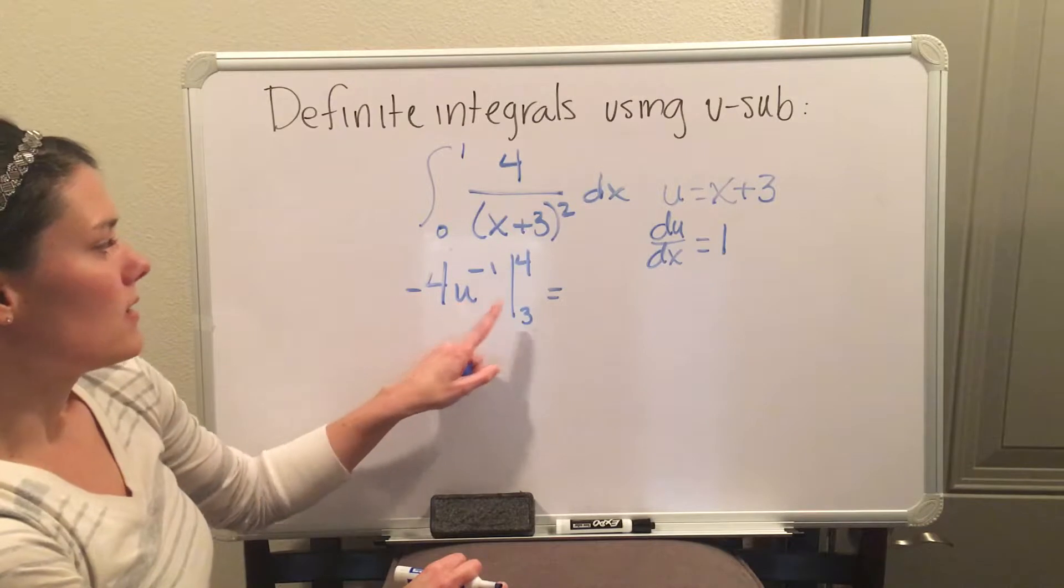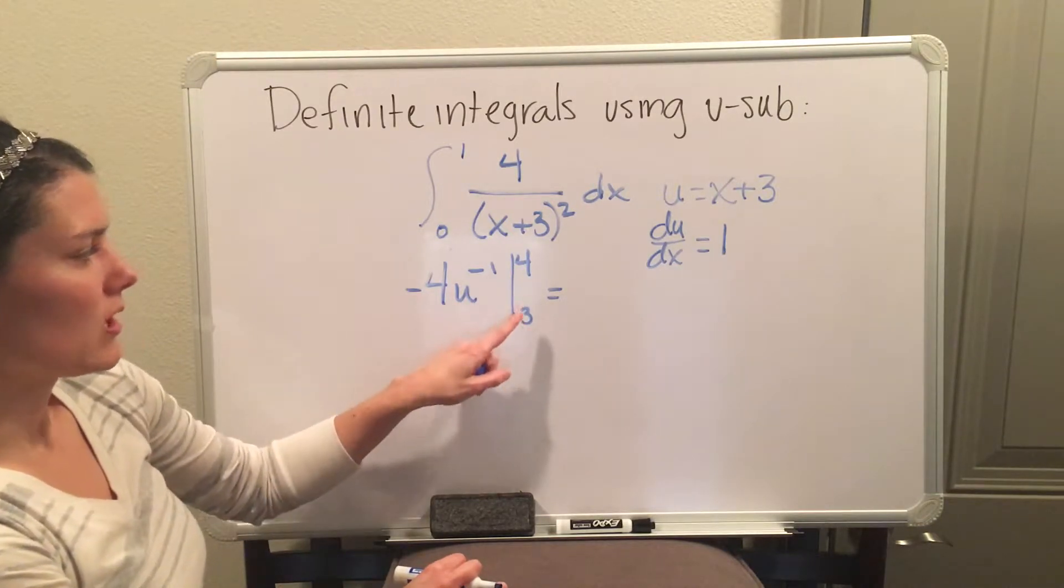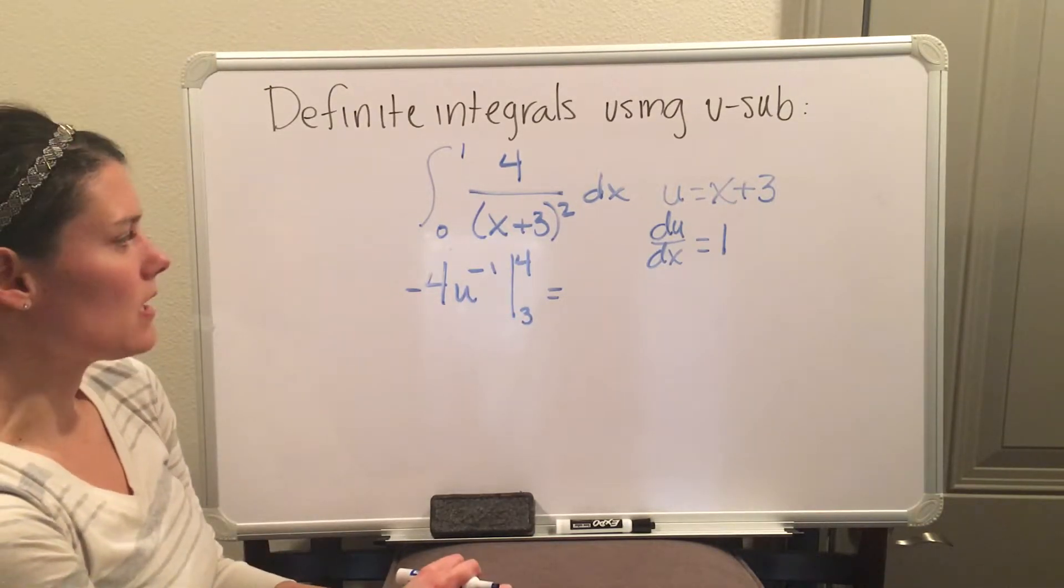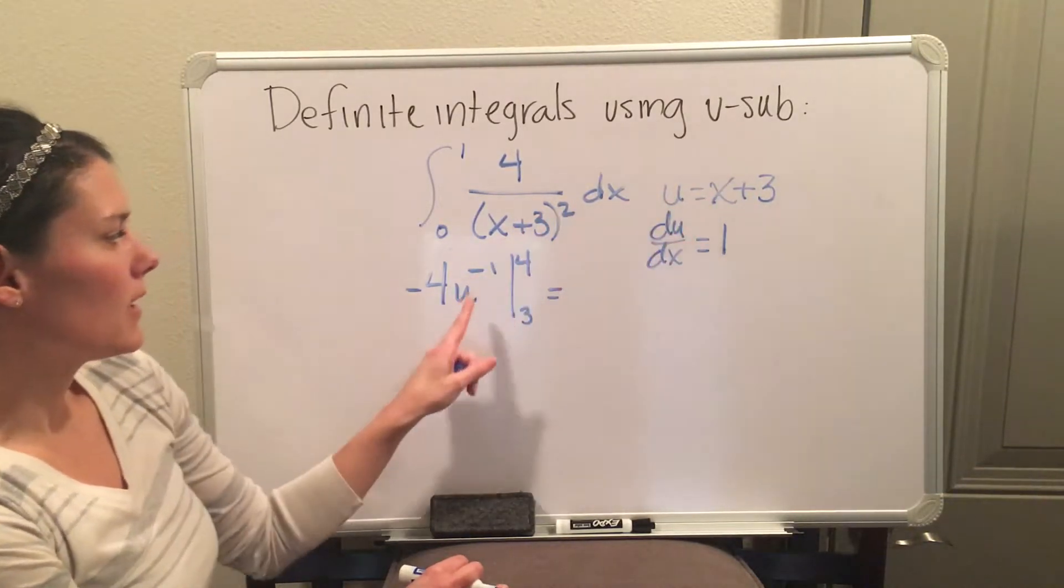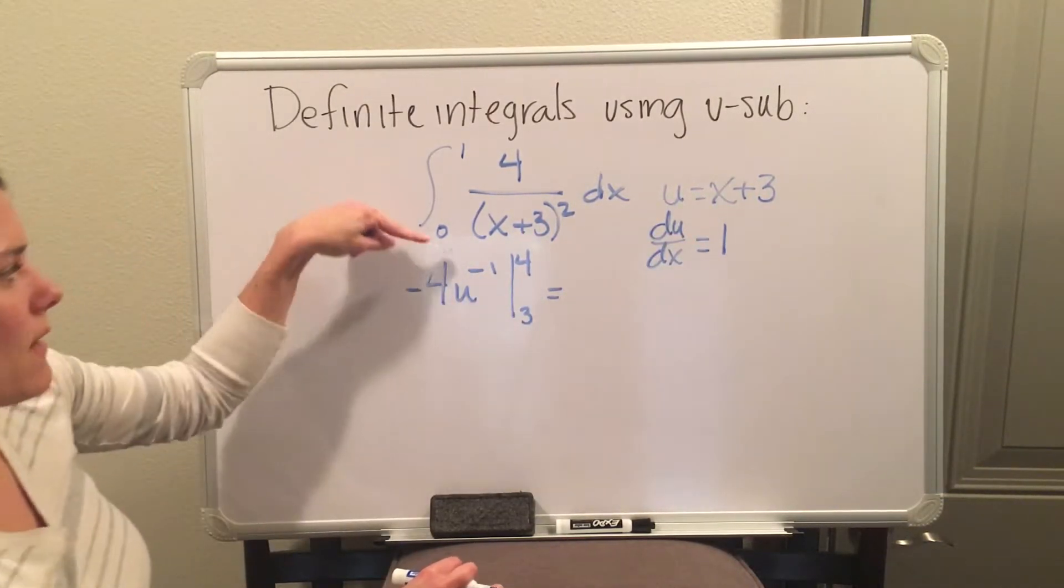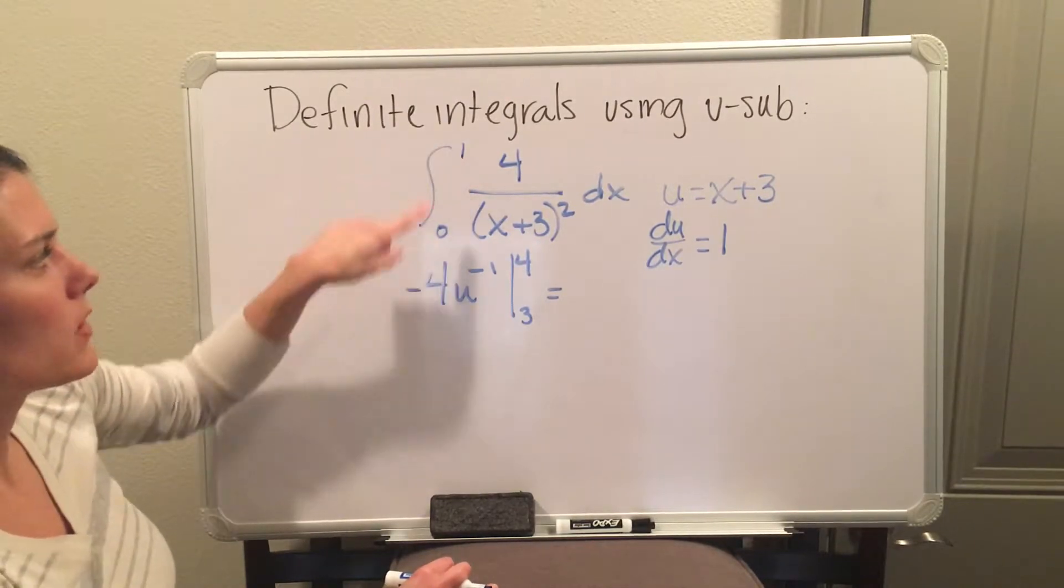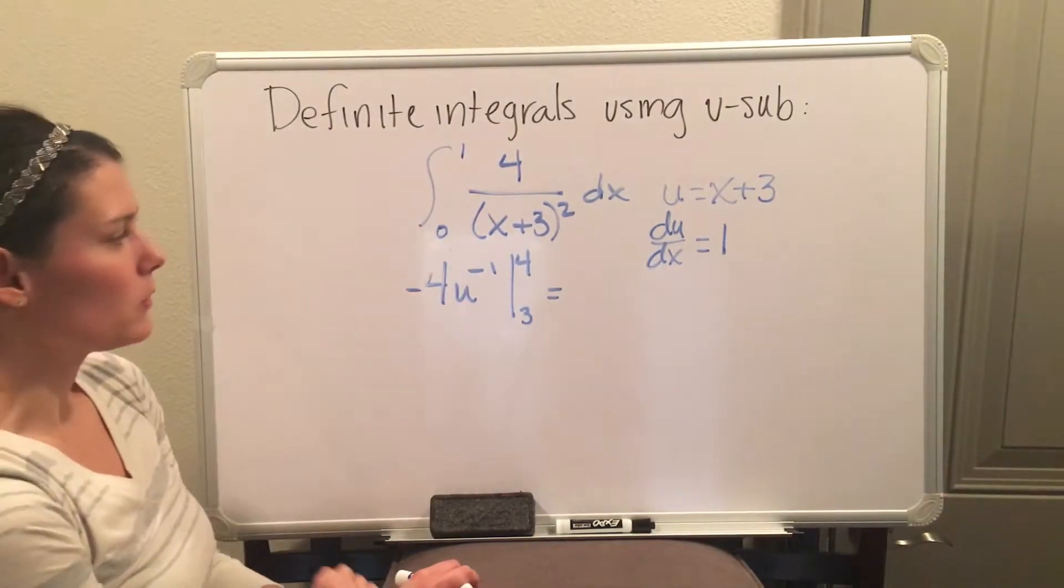At this point, make sure you do not plug x plus 3 back into your u, because since we do have a definite interval, you're just going to go ahead and apply the FTC, which is plugging in the b and then plugging in the a. If you were to plug the x plus 3 back in, you would have to revert back to the original a and b. So make sure you just keep it as a u.